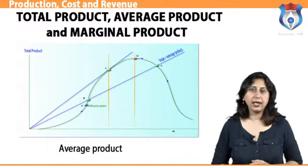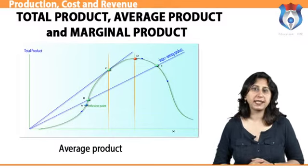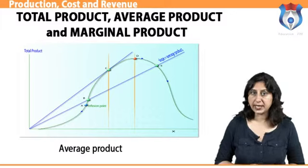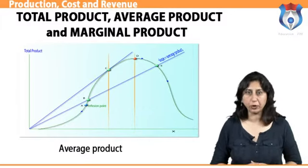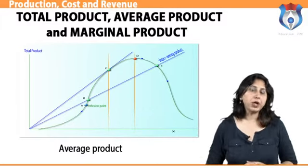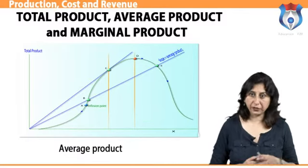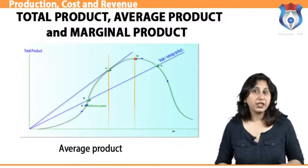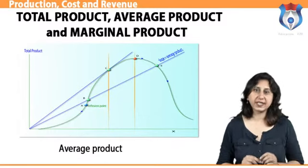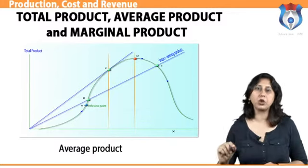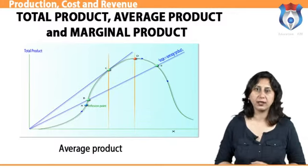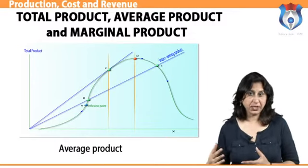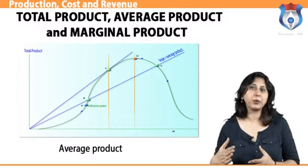Average product is defined as the output per unit of variable input. We calculate it as total product divided by the number of units employed. The average product curve is a graphical representation of the relation between average product and the variable input. The average product curve is hump-shaped, with a positive slope giving way to a negative slope.